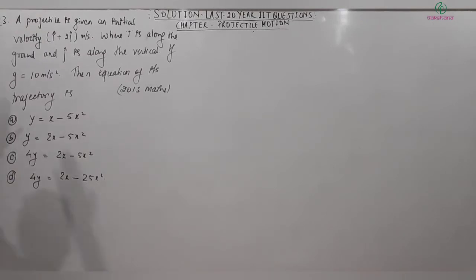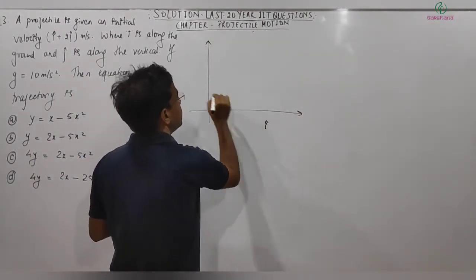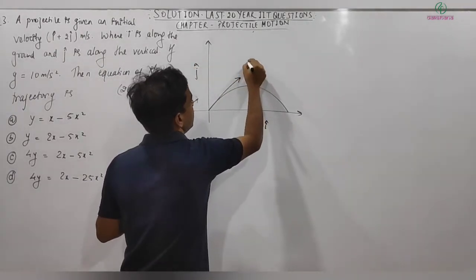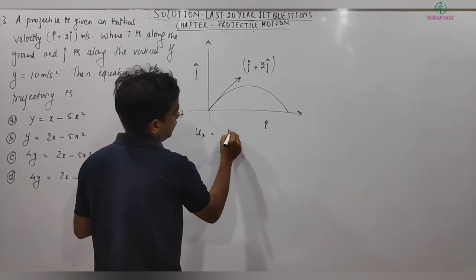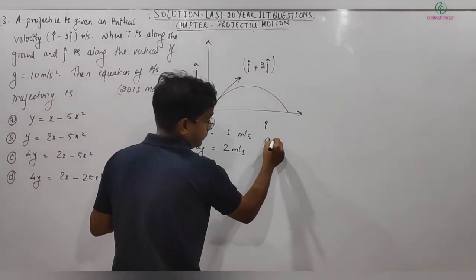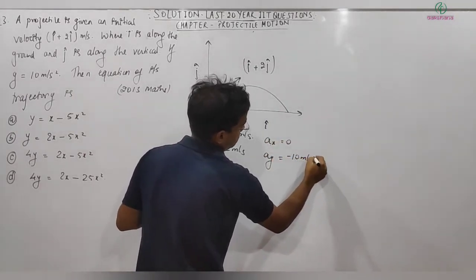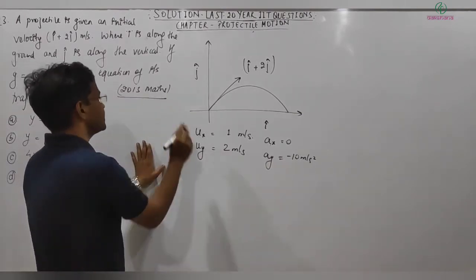The next problem, asked in IIT 2013: A projectile is given an initial velocity of î + 2ĵ m/s, where î is along the ground and ĵ is along the vertical. So uₓ = 1 m/s, u_y = 2 m/s, aₓ = 0, a_y = −10 m/s². Find the equation of its trajectory.